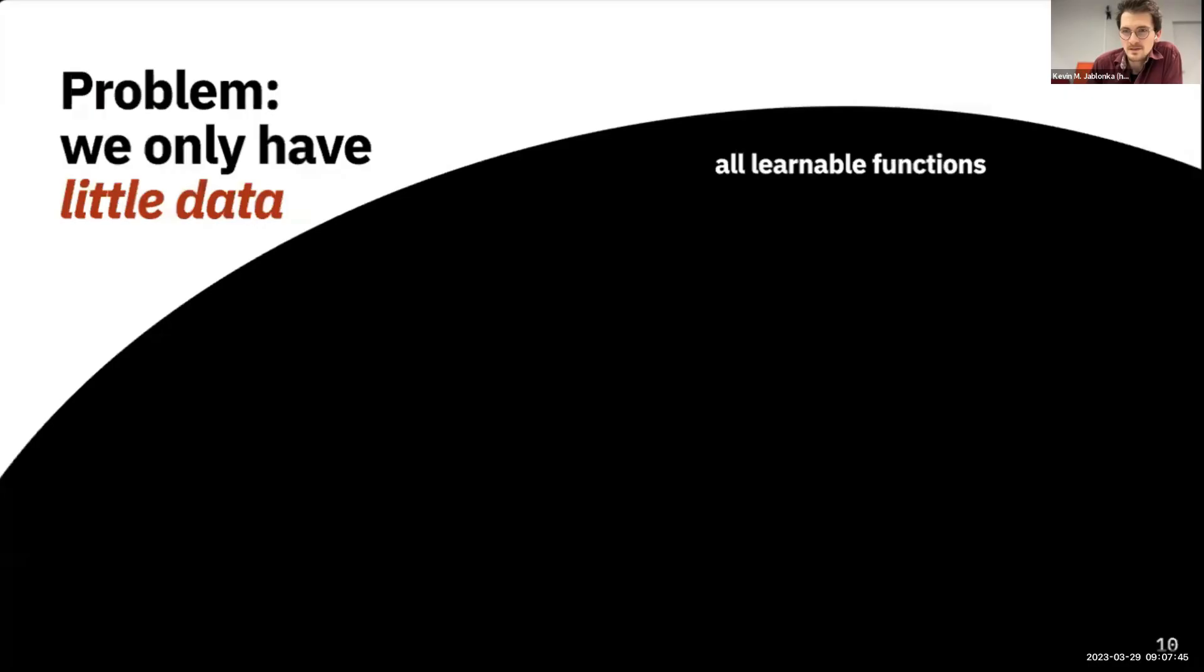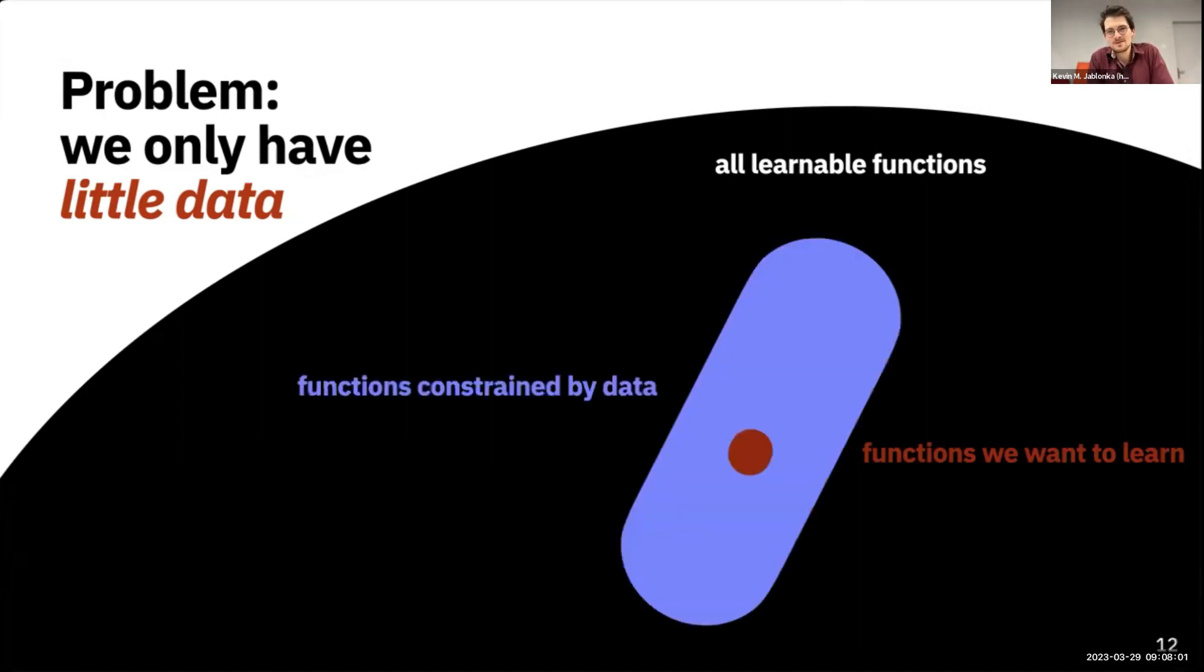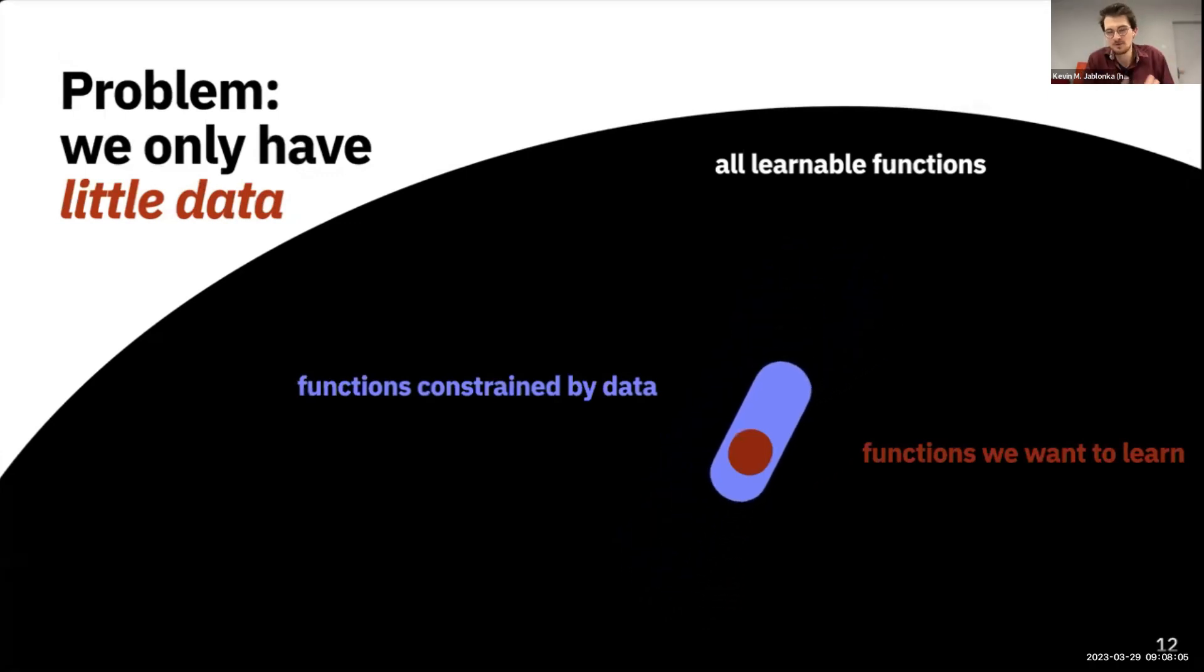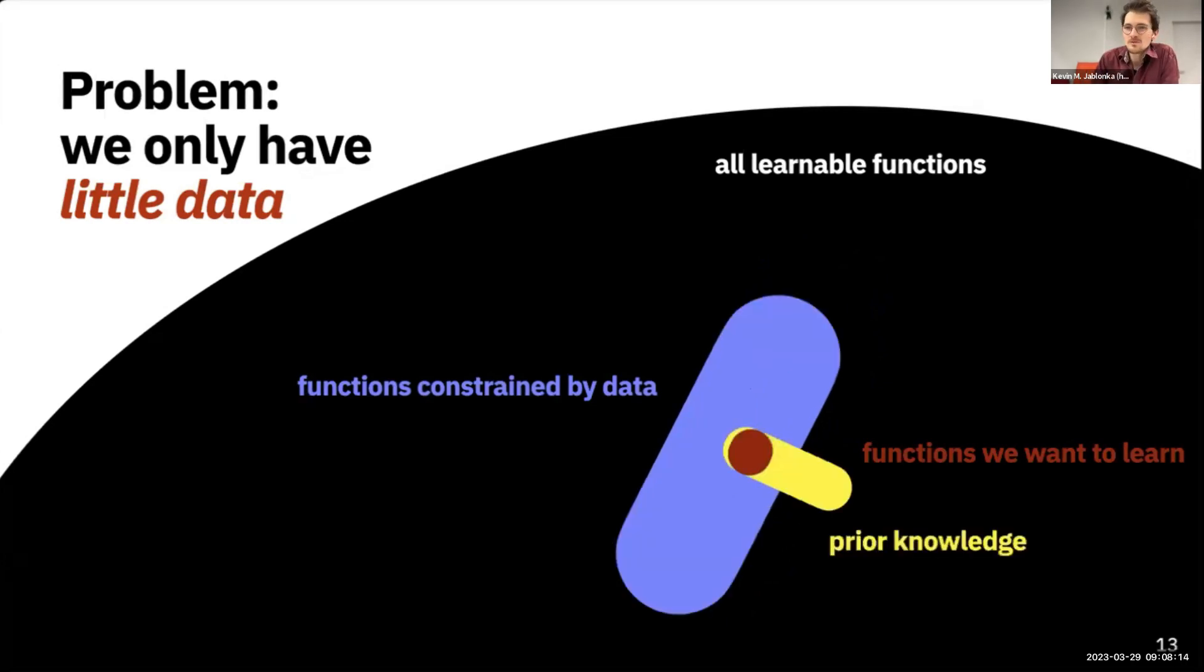The challenge, however, is that models can learn a lot of different things. Most models can learn almost any function, but we want to learn only the right function, which are only a small part of all functions. If you're Google, you would just use data and throw data at this problem to constrain what you can learn with your models. However, in chemistry, data is of course an issue, and therefore we have to incorporate all we know about chemistry and physics into the way we build our models.